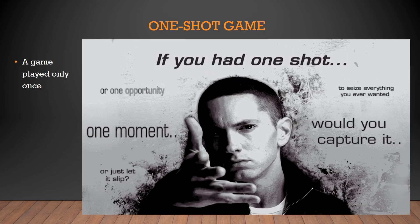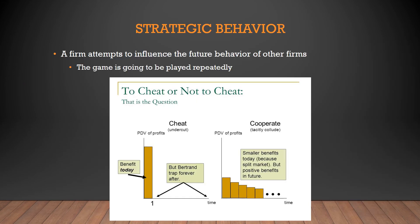What we've been talking about so far are known as one-shot games — games played only one single time. But how are things going to change if we play more than once? Then you can engage in strategic behaviors, where the firm attempts to influence future behaviors of the other firms. They might not cheat because if they cheat, the other firm is going to cheat back and then nobody makes money after that. So you're going to behave a little bit more strategically.